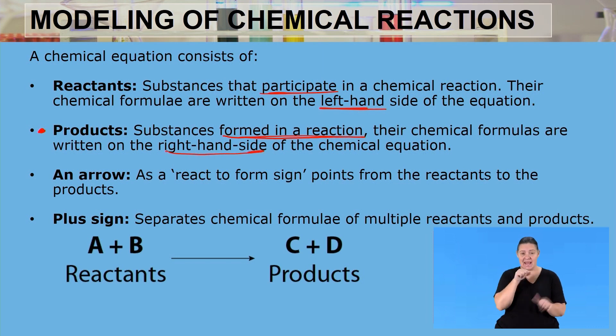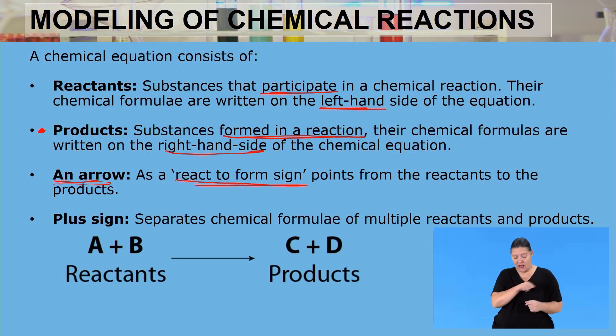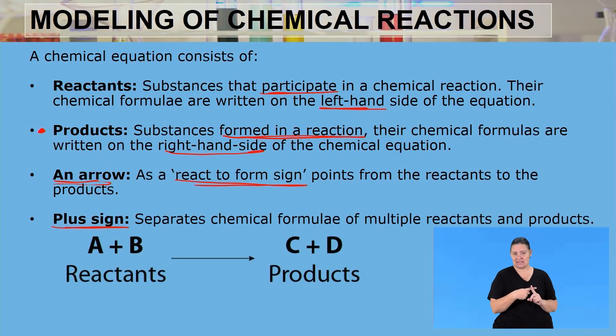Within a chemical reaction we also have an arrow. This arrow denotes a 'react to form' sign, which points from the reactants to the products, telling you that these substances have undergone a chemical reaction to form something else. We also have a plus sign that separates the chemical formulas of the reactants, because in certain reactions we have two or more reactants or two or more products.